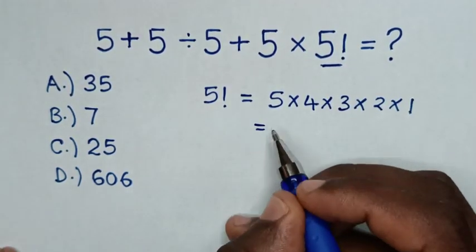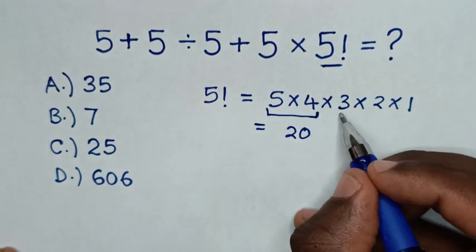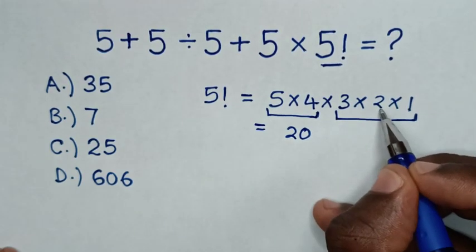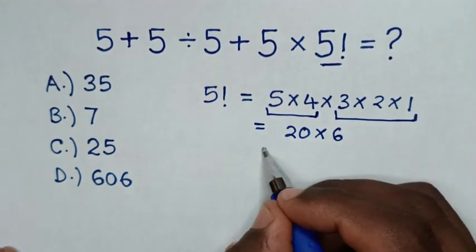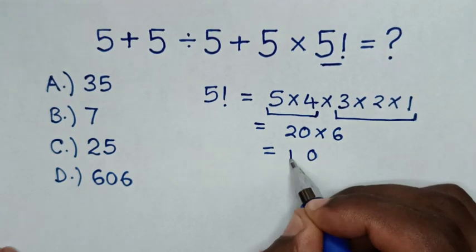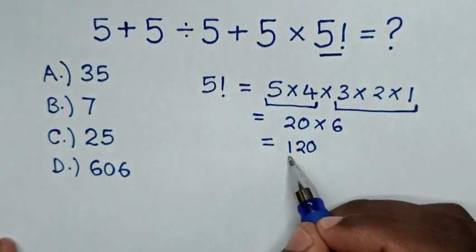Then it will be equal to 5 times 4 is 20. Then 3 times 2 is 6. 6 times 1 is 6. So times 6. Then it will be equal to, this times this is 120. So in 5 factorial, we'll substitute 120.